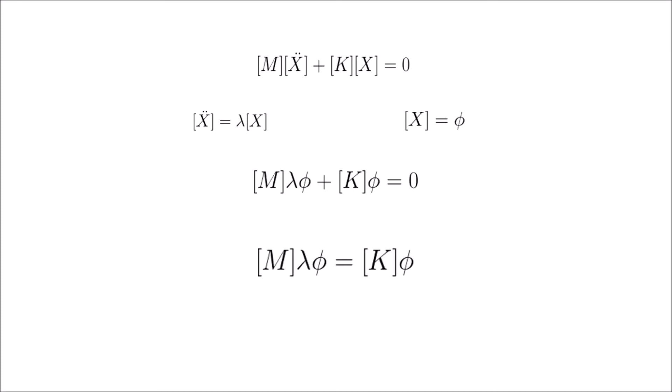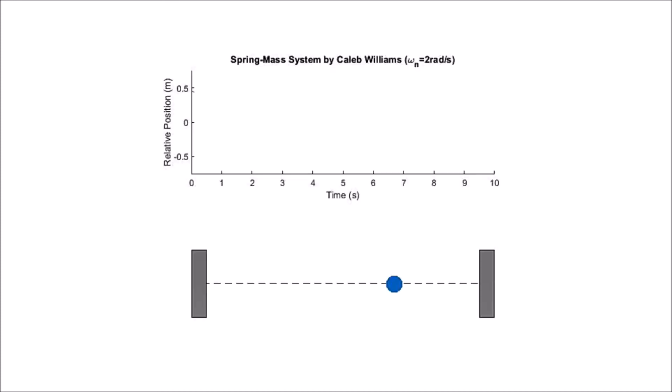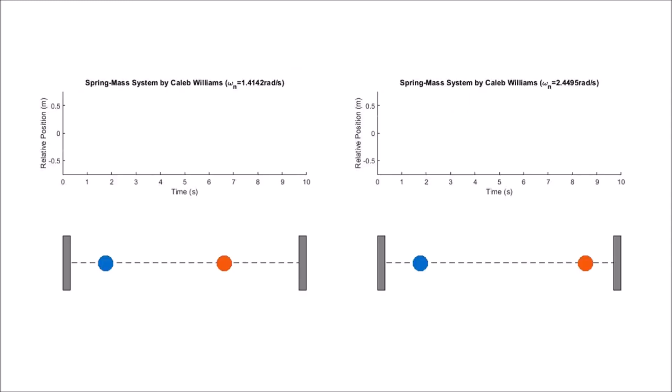So what do the modal responses look like for various systems? Well, for a single-body system, it's just going to be a sine wave as the mass is displaced initially and then left to oscillate. For a two-mass system, we've already discussed this, in the first mode, both masses are displaced an equal amount in the same direction, whereas in the second mode, the masses are displaced an equal amount but in opposite directions.